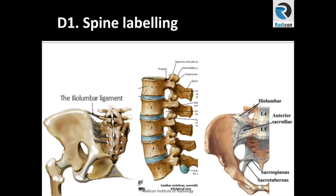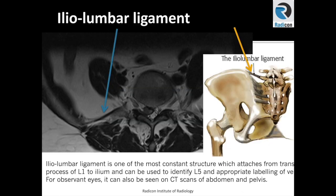Then 5 lumbar type mobile vertebrae and finally 5 sacral vertebrae which are fused and fixed. It is possible to have variation in these — some people can have 4 or 6 lumbar type vertebrae. The most common level for this variation is the lumbosacral junction, where L5 can be fixed and become effective S1, or S1 can become mobile and act as L5. These are called lumbosacral transitional vertebrae or LSTV. The best way to identify these is to count from the highest possible vertebrae. A gold standard is a full body CT counting from the 1st thoracic vertebra.